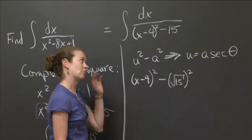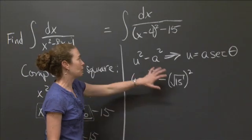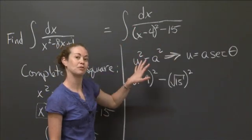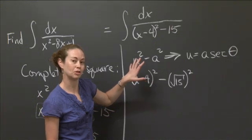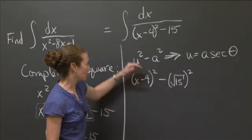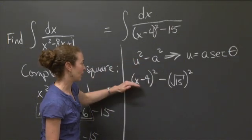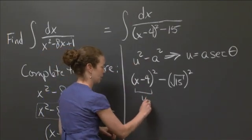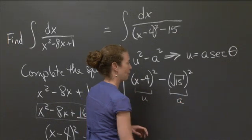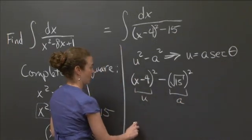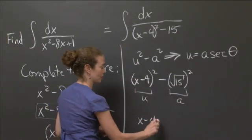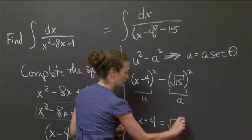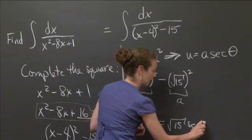Now he probably wrote it as x, but I wrote it as u for a very specific reason. Because here I have x minus 4. I have x minus 4 quantity squared. Now this is where it gets a little rough, right? This is not a perfect square. But it is the square of the square root of 15. So I can write the denominator in the form something squared minus something else squared.